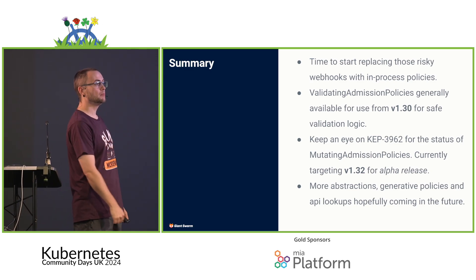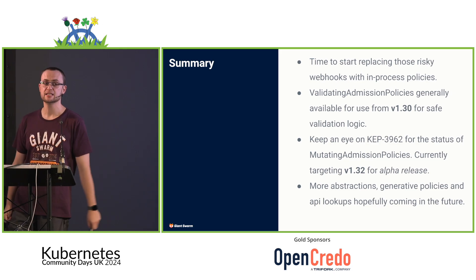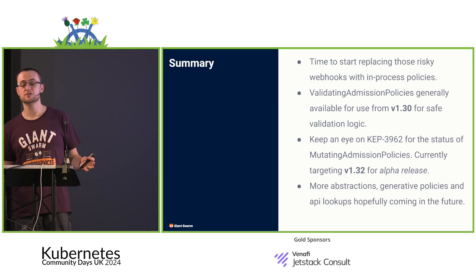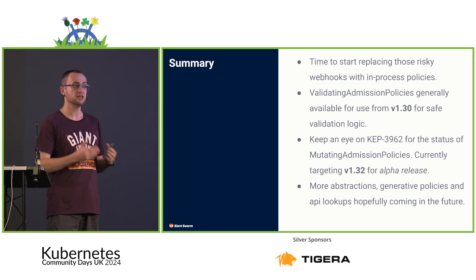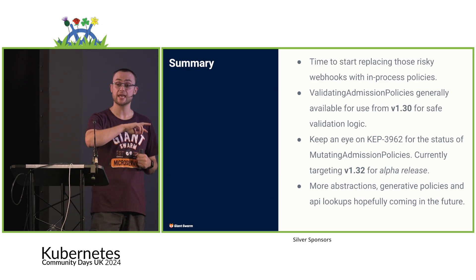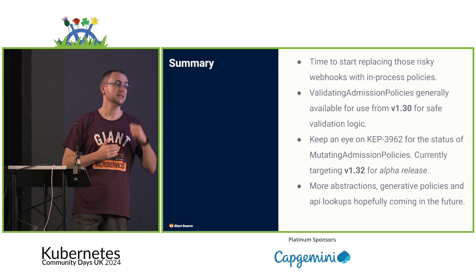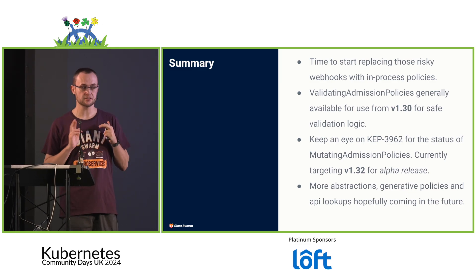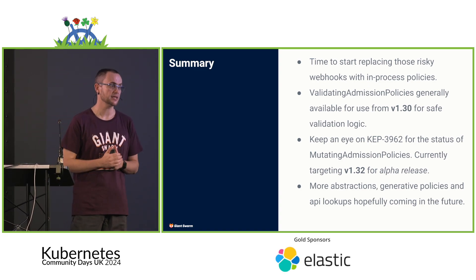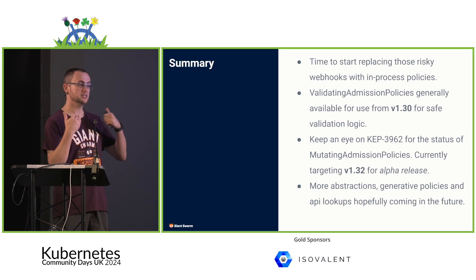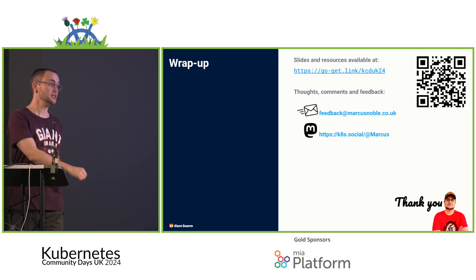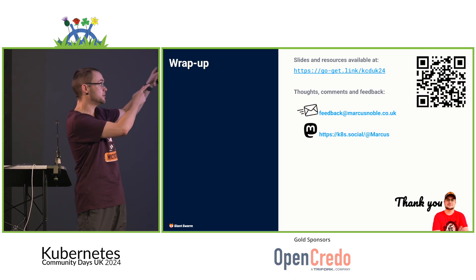To quickly summarize: try to start replacing those risky validating webhooks with validating admission policies — they're much safer, in-process, quicker, and can save you from your API server potentially going down. Validating admission policies are generally available from v1.30; if you're on 1.28 or 1.29 you need to enable it through a feature flag. Keep an eye on KEP3962 for mutating policies — it's targeting version 1.32 but has been pushed back a couple of times. I'm hoping we see more abstractions, generative policies, and API lookups once this has been battle-tested. Thank you — slides are available, please get in touch if you have any feedback.